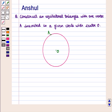Hello and welcome to the session. In this session, we are going to discuss the following question: Construct an equilateral triangle with one vertex A inscribed in a given circle with center O.